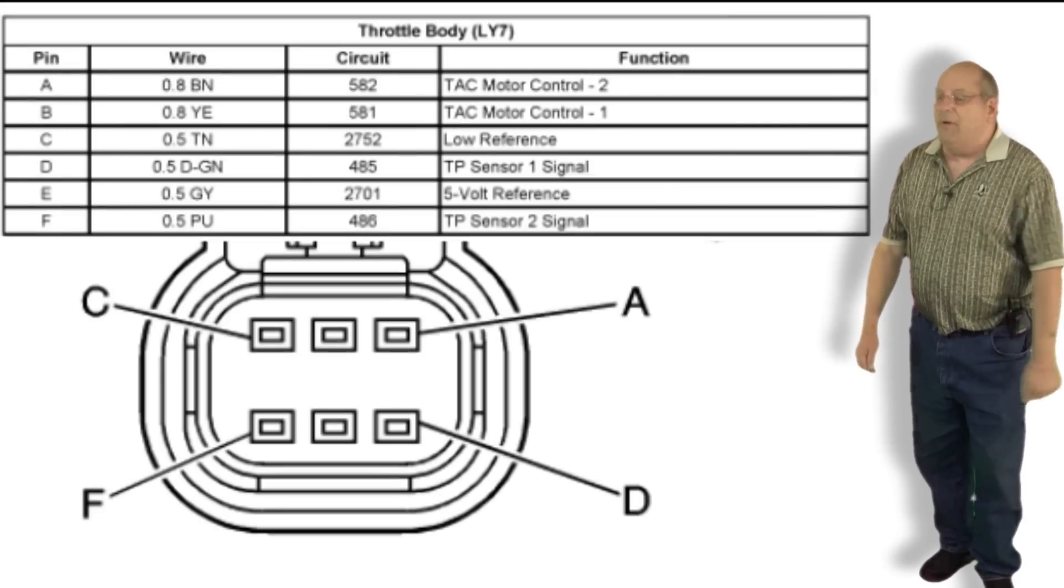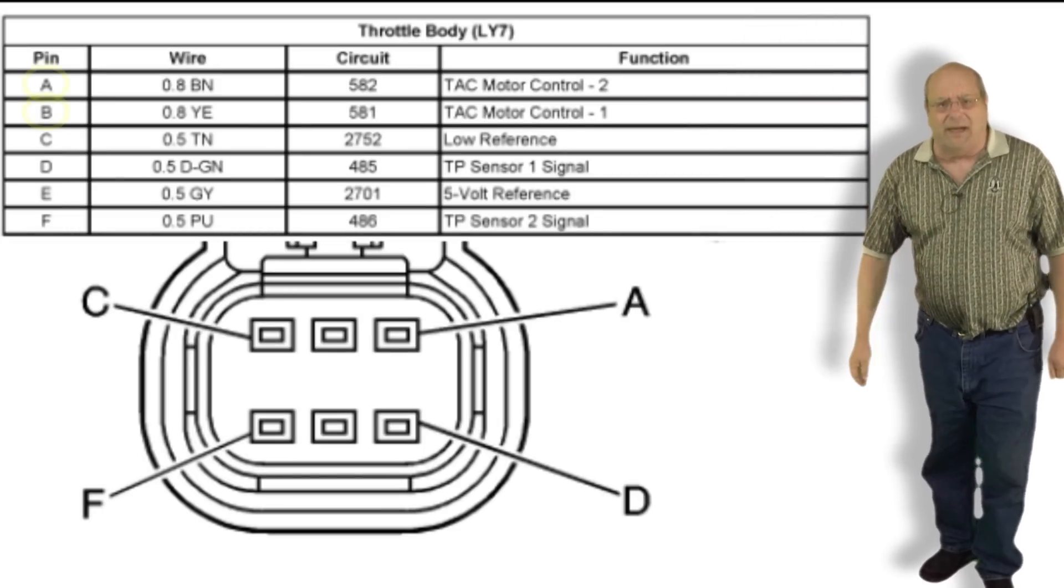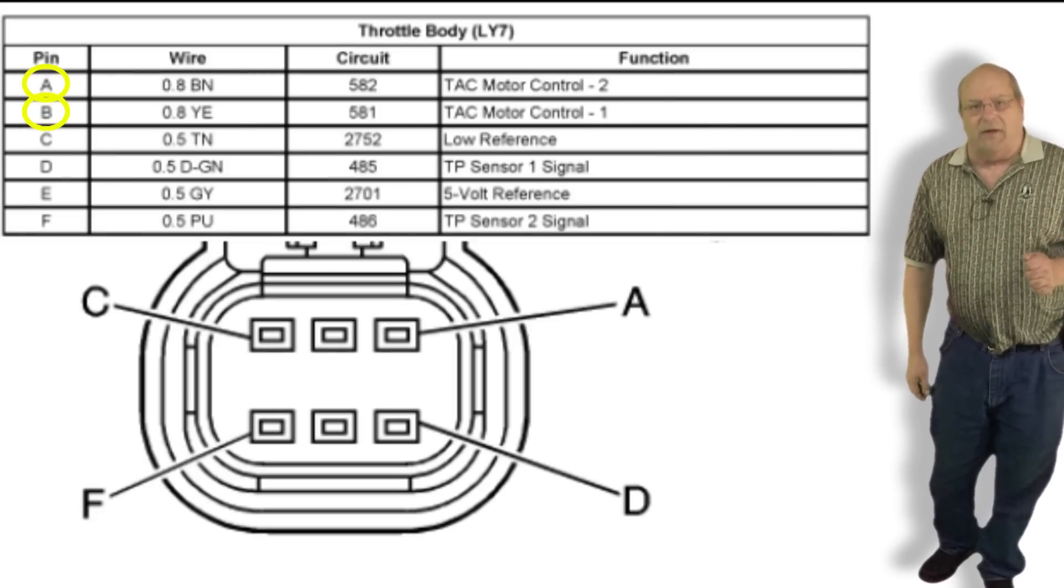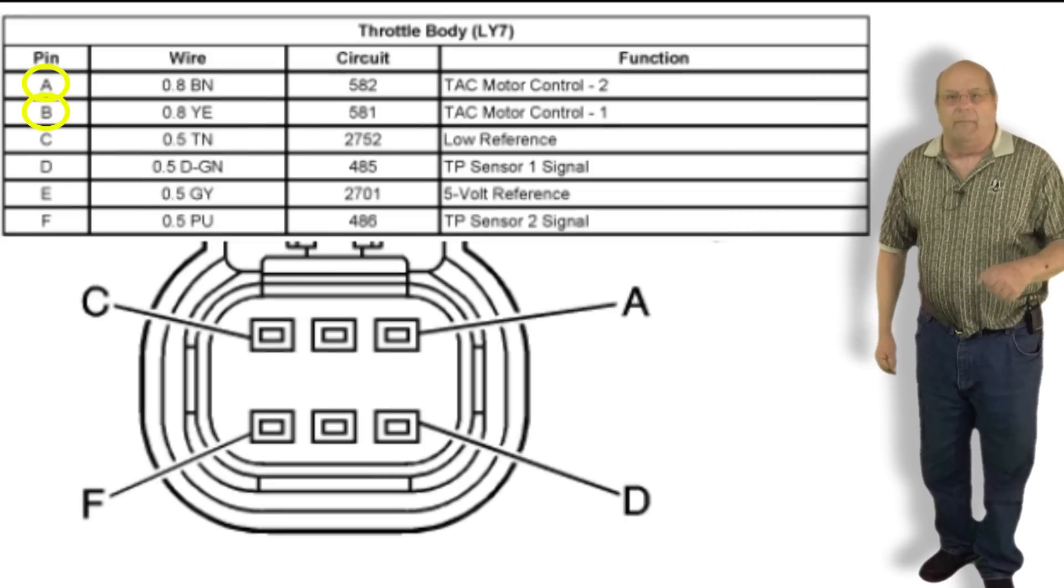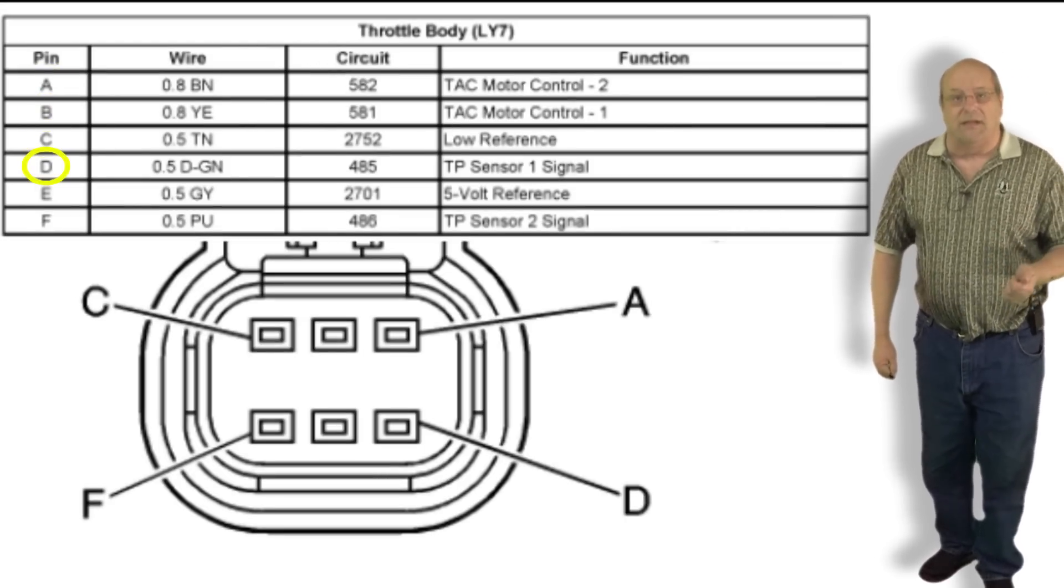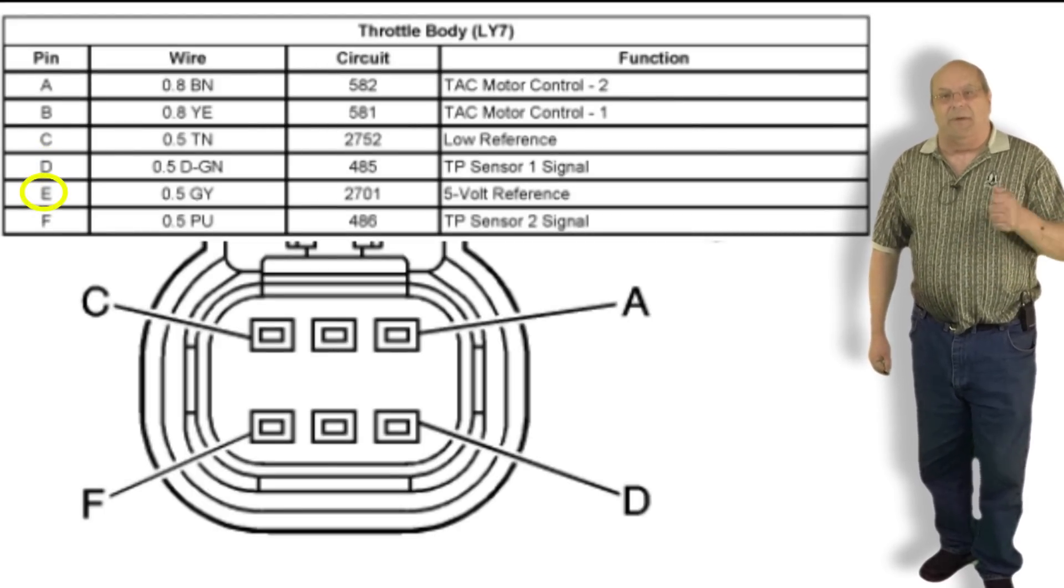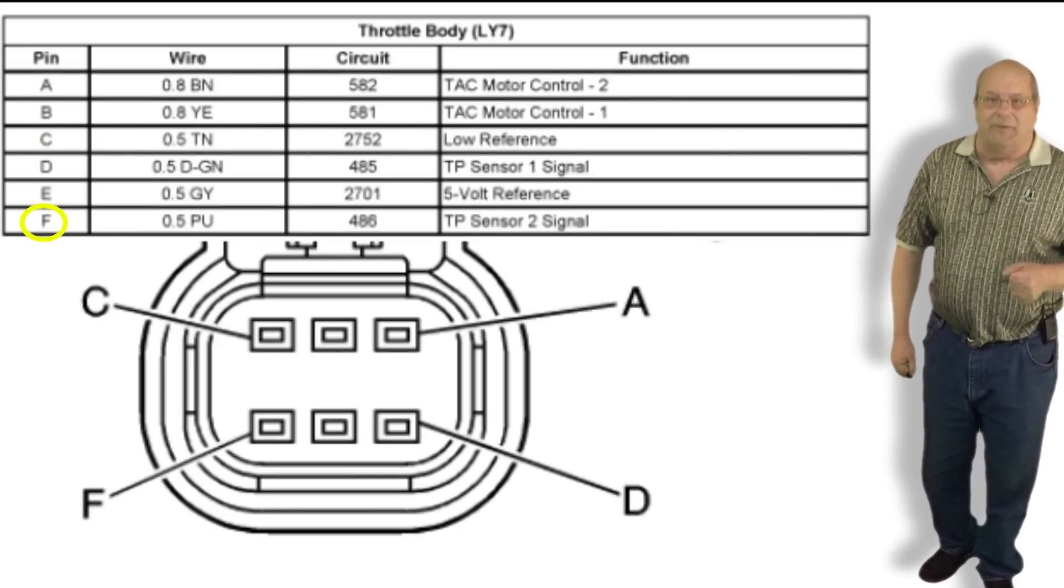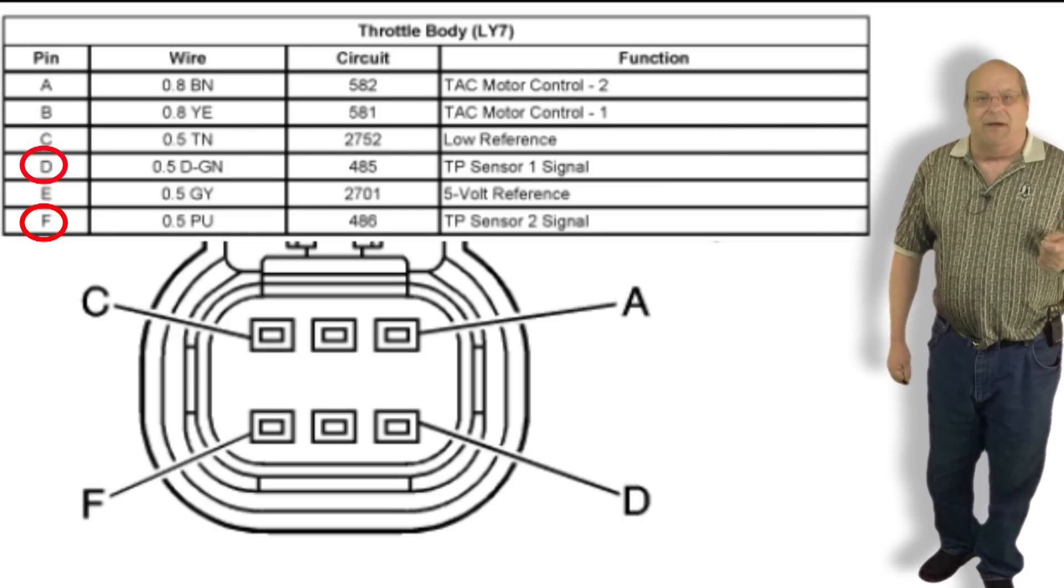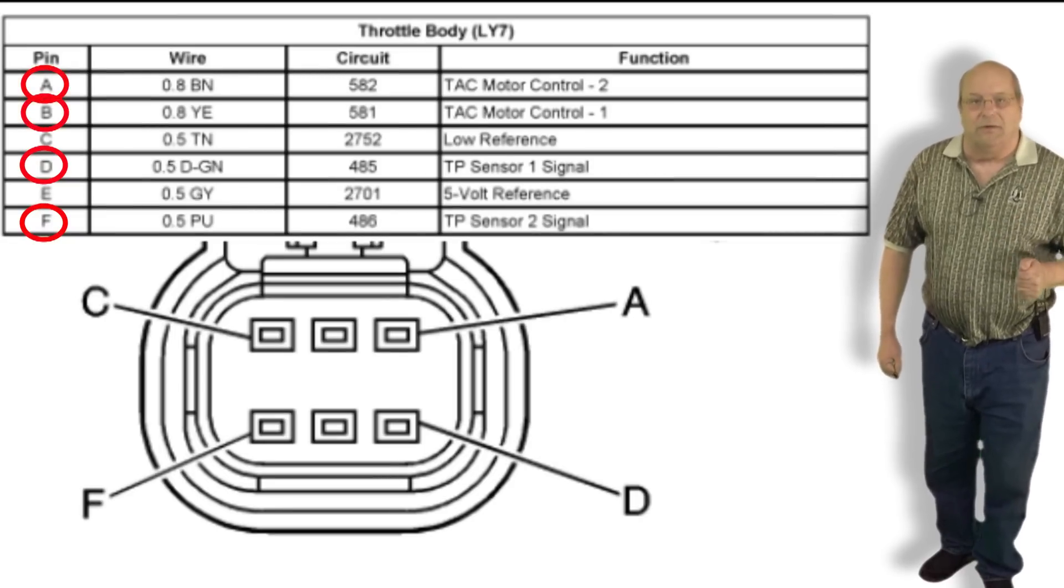This is a pin out diagram for the throttle body on this vehicle. Pins A and B control the motor. We will amp clamp one of these wires, it does not matter which wire. Pin C is a low reference or ground. Pin D is a signal for the first TP sensor. Pin E is a 5 volt reference and pin F is a signal for the second TP sensor. We will back probe pins D and F and observe the TP sensor signals and amp clamp one of the wires going to the motor.